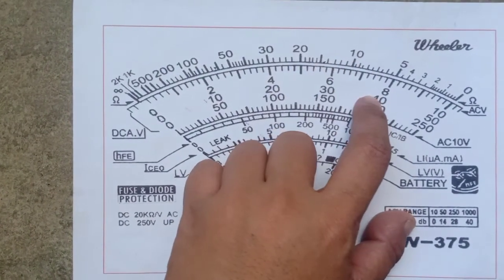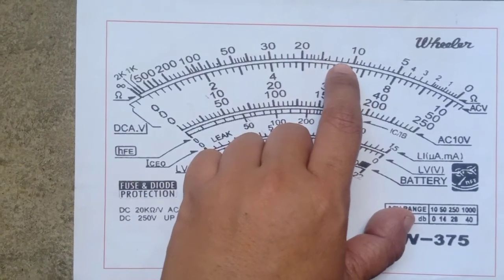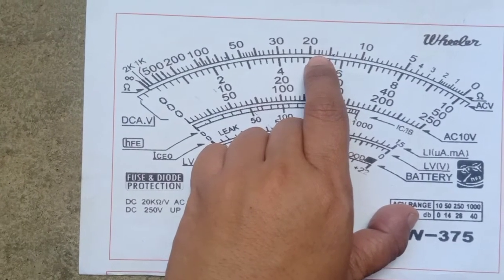10 to 20, ang bilang ng kada lines niyan ay 1. So, 10, 11, 12, 13, 14, 15, 16, 17, 18, 19, 20.